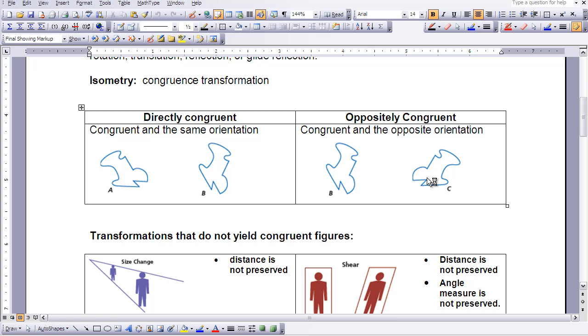Now some of the transformations that we have studied do not preserve angle measure, betweenness, collinearity, and distance. They are not congruence transformations. Those are size changes that we studied in Chapter 3, and another one that we have studied in maybe a previous course or you may study later in Chapter 4 of Advanced Algebra, and that's called a shear. In this case, our distance is not preserved and angle measure is not preserved, so they are not congruent figures and they are not considered to be congruence transformations.